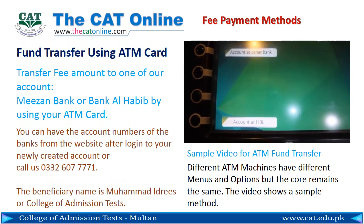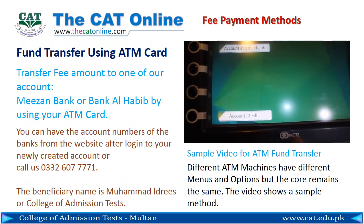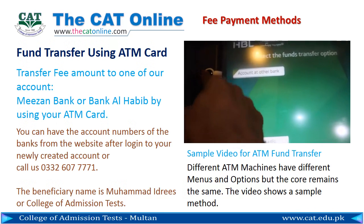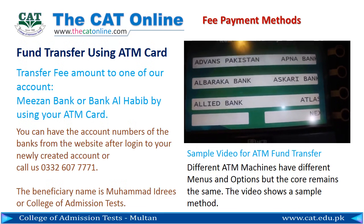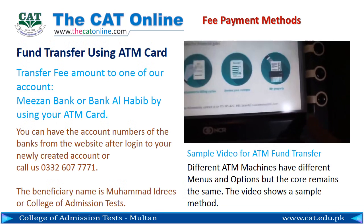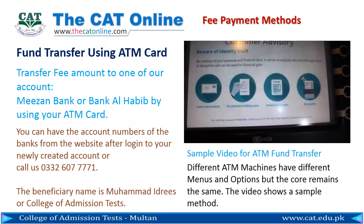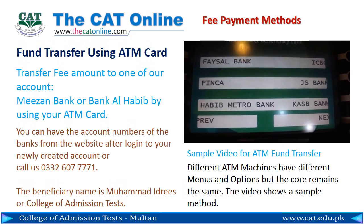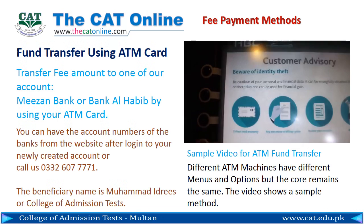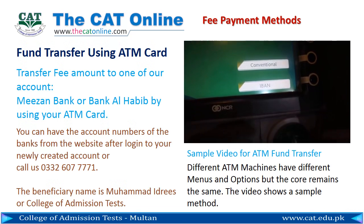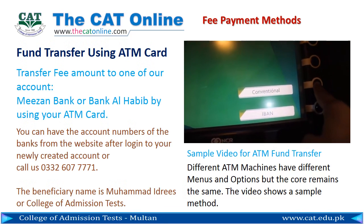The next menu displays another option for selection. If you do not have an ATM card of Bank Al-Habib or Meezan Bank, then choose Account at Other Bank. The next menu displays a list of banks. Find Bank Al-Habib or Meezan Bank. The next menu displays the type of account number — IBAN, International Bank Account Number, or Conventional. Select Conventional.